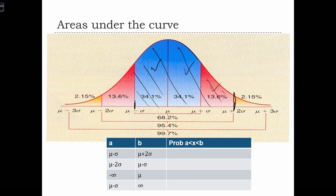All we have to do is add up 34.1 plus 34.1 plus 13.6, which is going to be 81.8 percent. Okay, let's do the next one. μ minus 2σ and μ minus σ. Well, that's just this area in here, 13.6 percent.